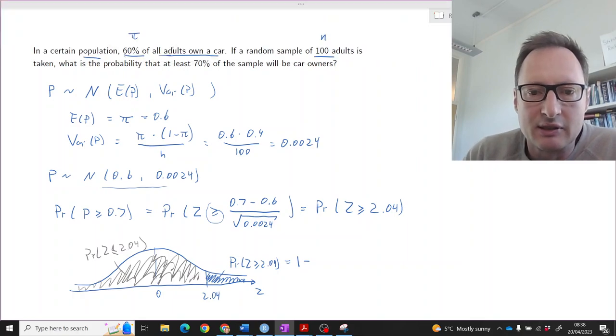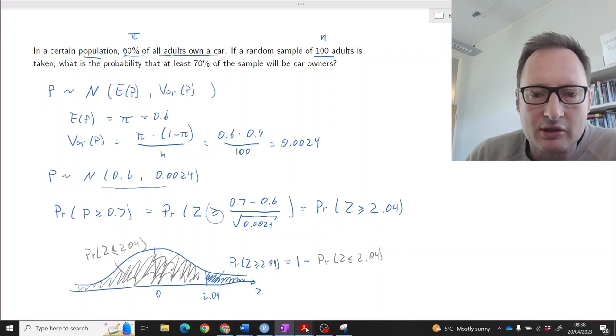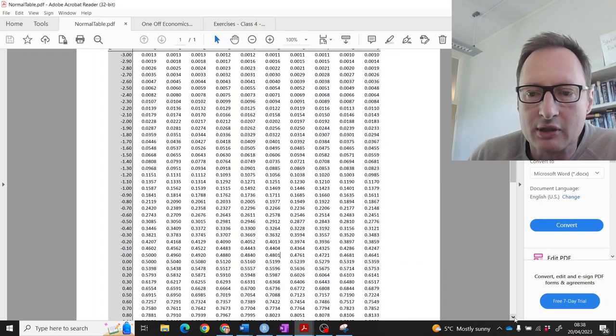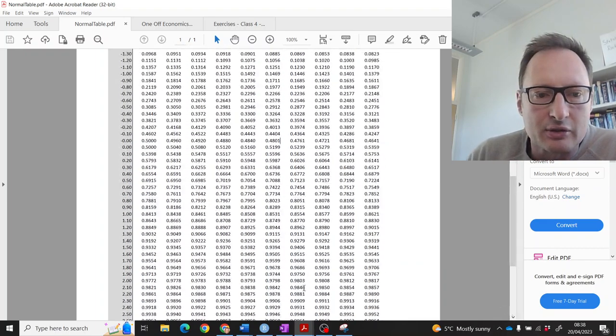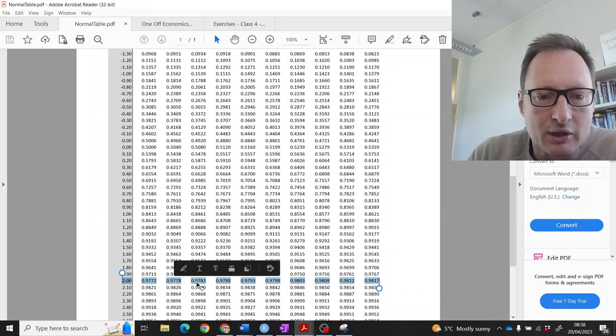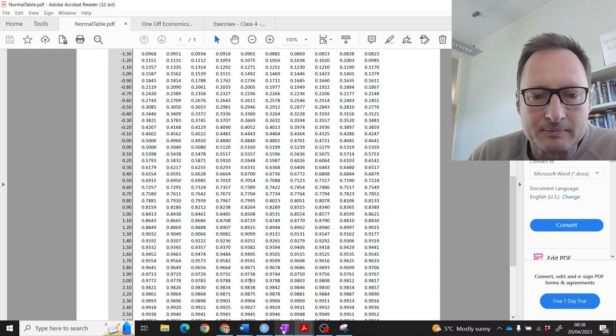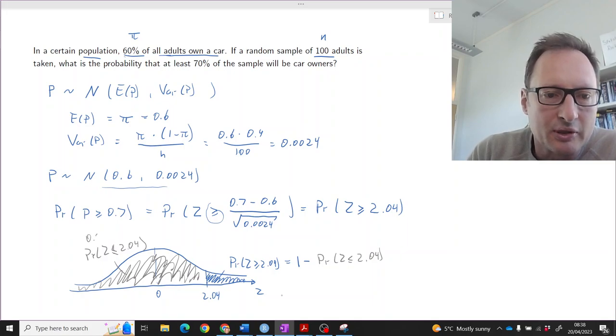So let's go to the table and find our probability 2.04. So you need to go to 2.0, then the column for 0.04. So it's 0.9793. So that gray one is 0.9793.